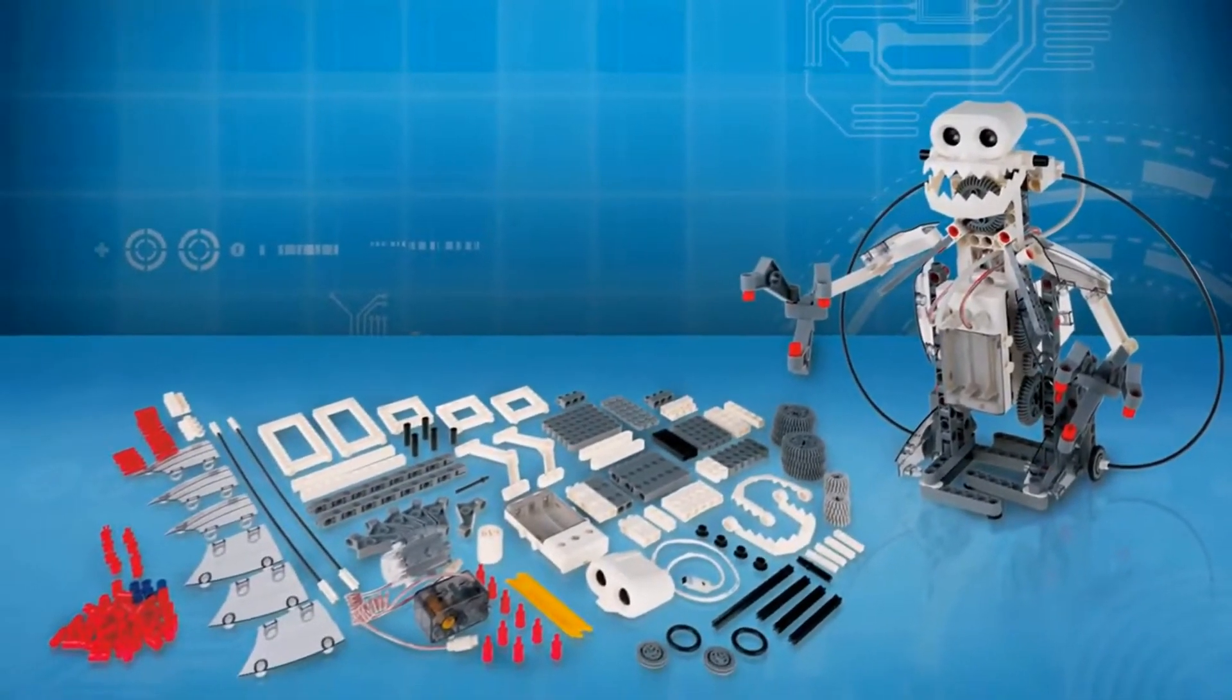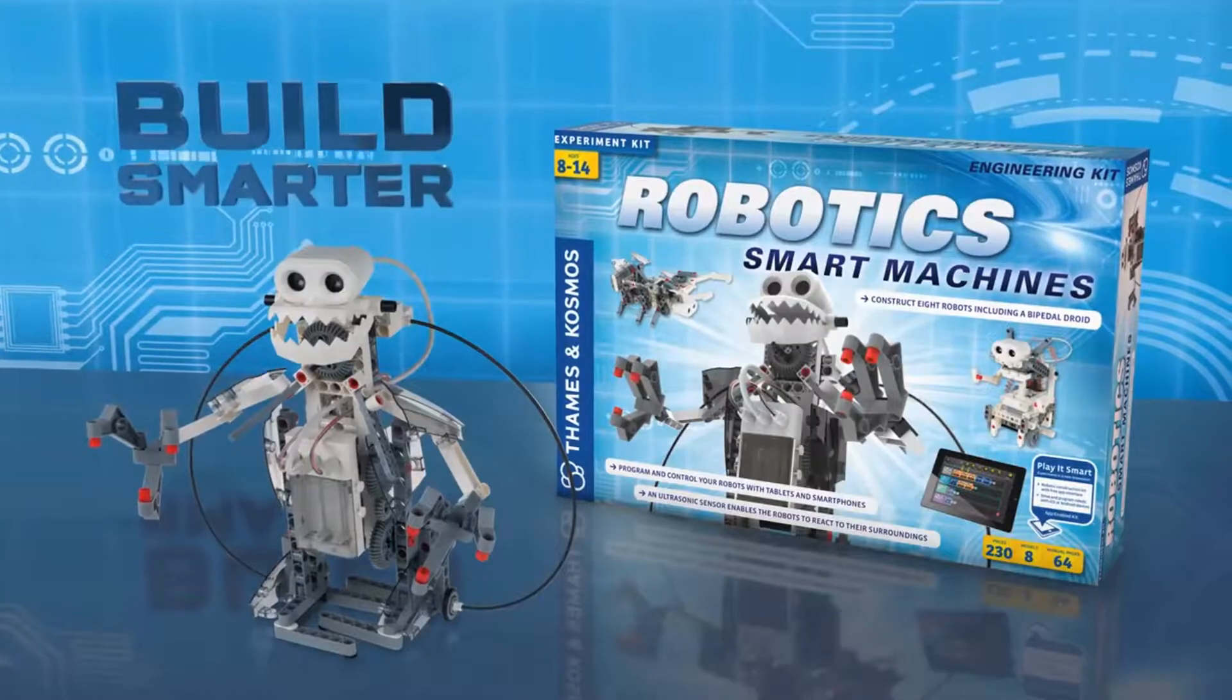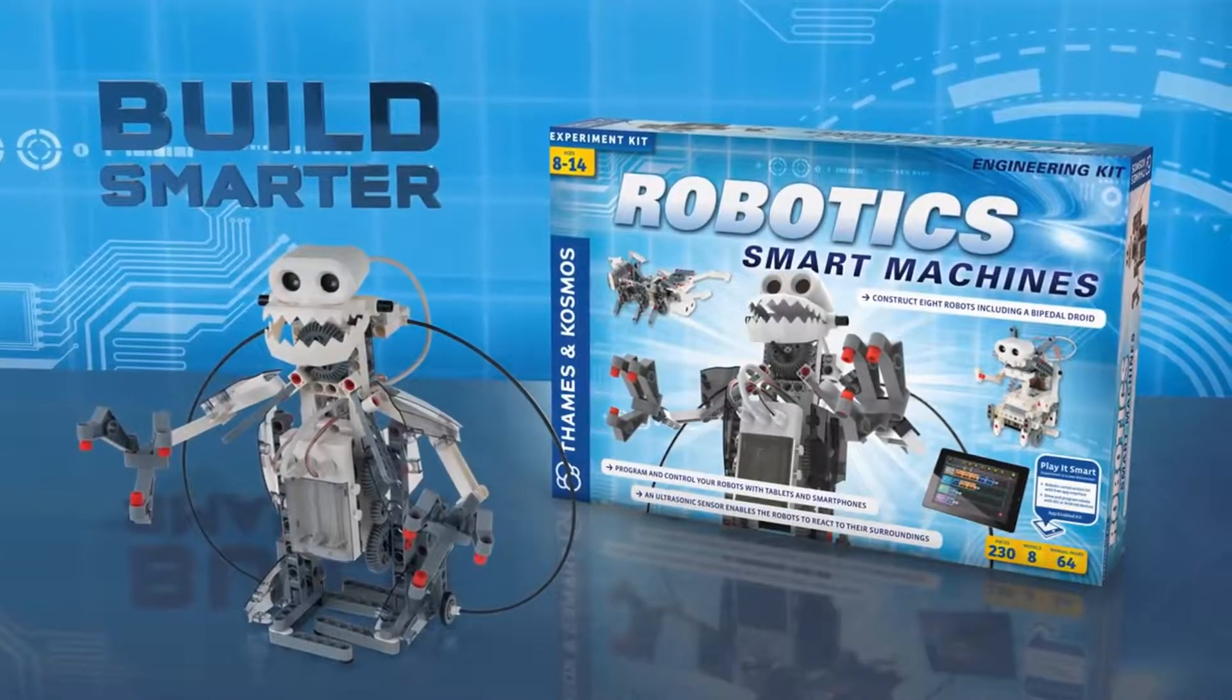After building the robots in the manual, you can use the 230 pieces to design, build, and program your own robot. Build smarter with robotics smart machines.